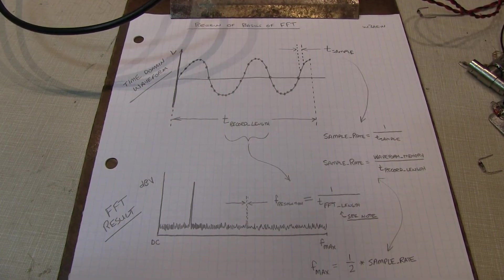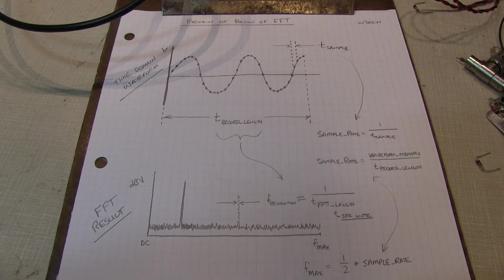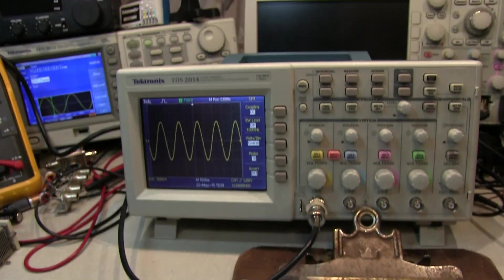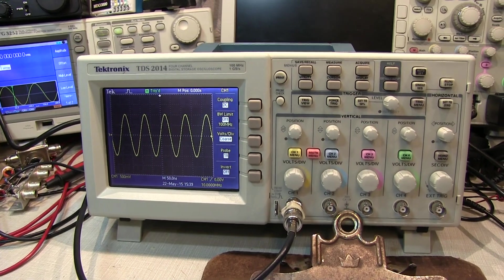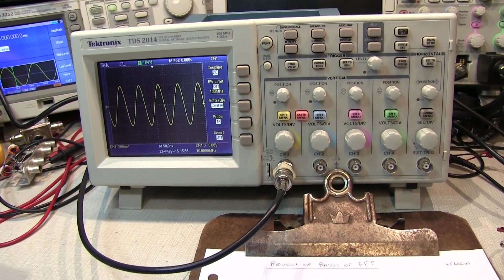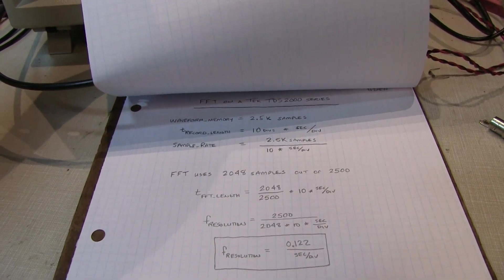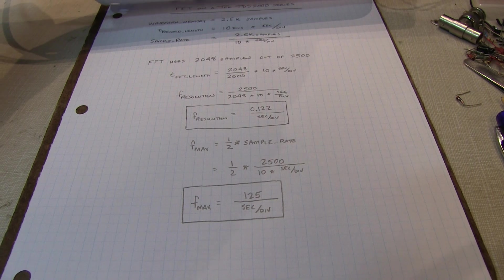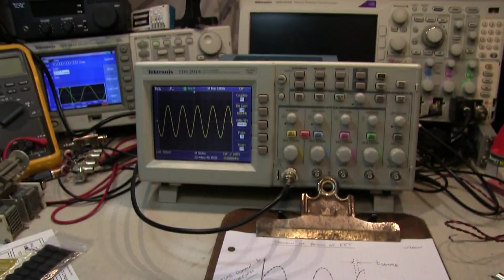We'll start off by just doing a quick review of the basics of an FFT, then we'll spend some time actually using the FFT on the TDS 2000 so you can see how to use it, and then for those interested we'll go a little bit more into some of the mathematical relationships between the scope settings and the FFT results. So let's get down to it.